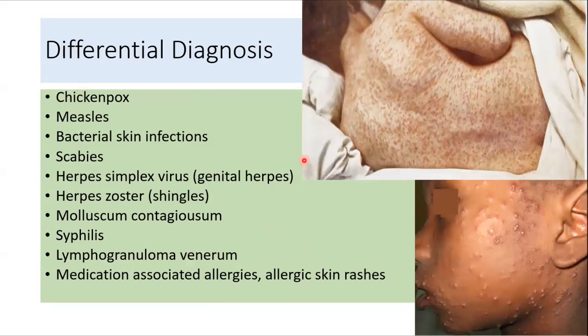The differential diagnosis is very broad, as all skin diseases presenting with rash can be considered, including chickenpox, measles, bacterial skin infections, scabies, herpes simplex virus, herpes zoster, molluscum contagiosum, syphilis, lymphogranuloma venereum, and even medication-associated allergies and allergic skin rashes.